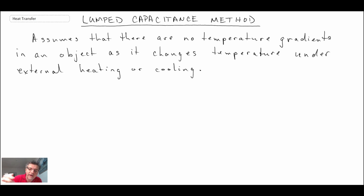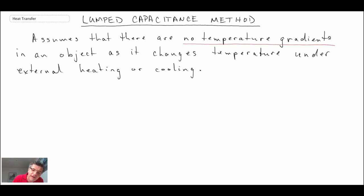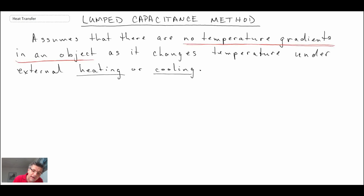What the lump capacitance method does is it assumes that our object — we're going to change the external condition on the object by changing the convective heat transfer environment. What we're assuming is that there are no temperature gradients within the object, and consequently we're assuming that the entire object is at one temperature and cools at whatever rate, or it could be heating if we put it into a warmer environment.